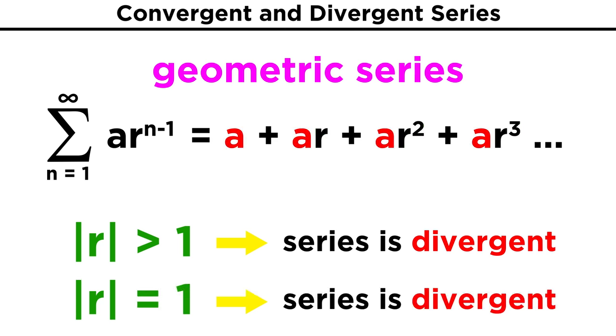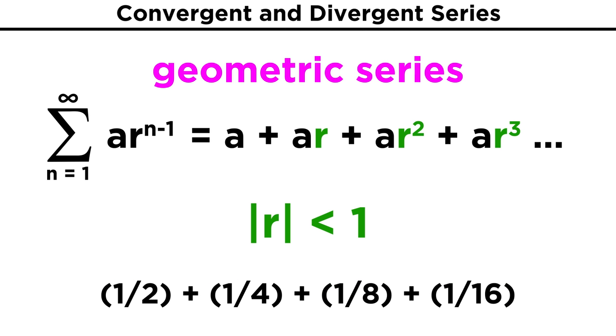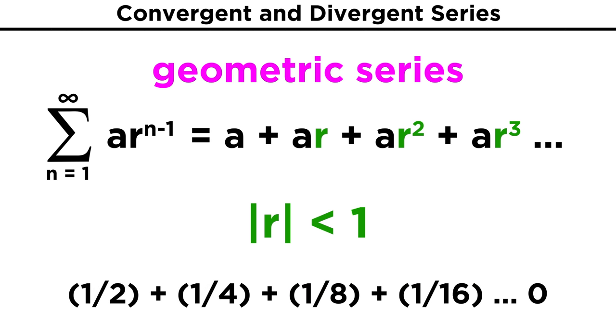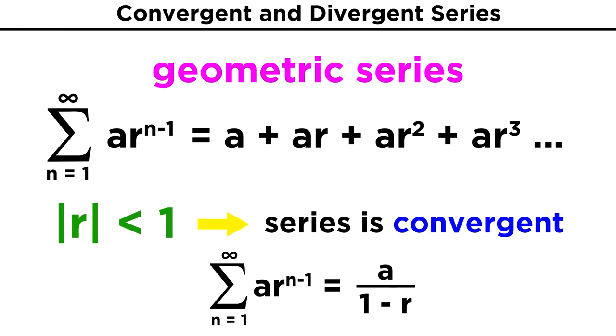If equal to one, we are just adding up infinitely many a terms, which will also be divergent. But going back to the sequence, if the absolute value of r is less than one, as it is raised to bigger and bigger exponents, each term will get smaller, and the limit of the sequence will be zero. So the series, or the sum of the terms, will be convergent, and the sum will be equal to A over the quantity one minus r.